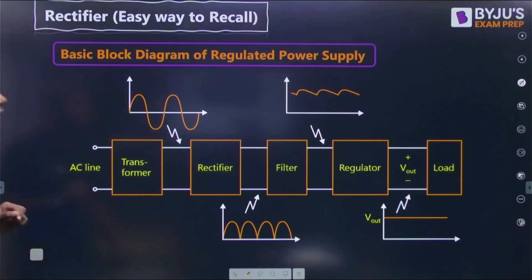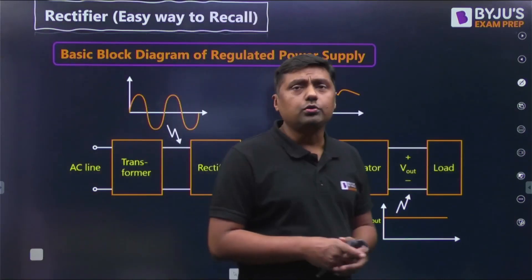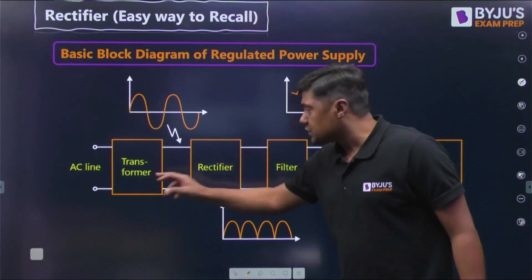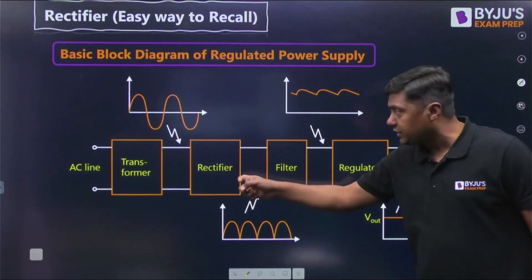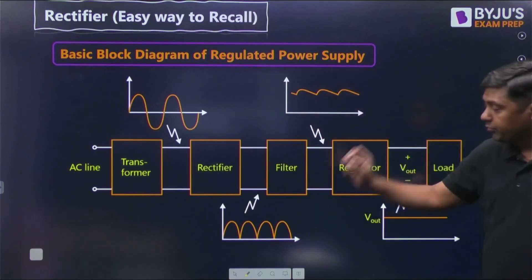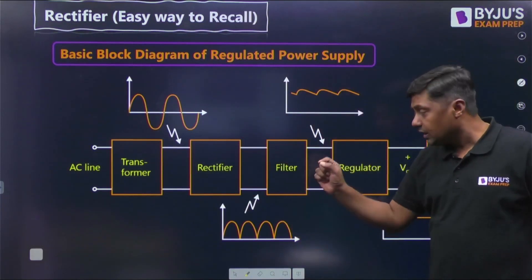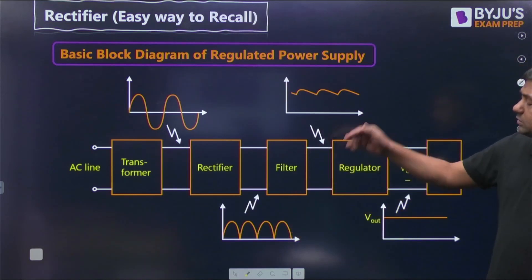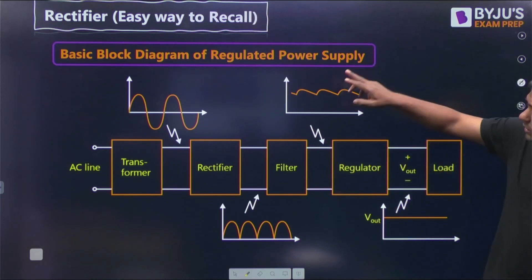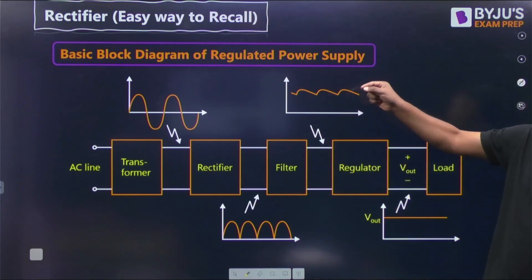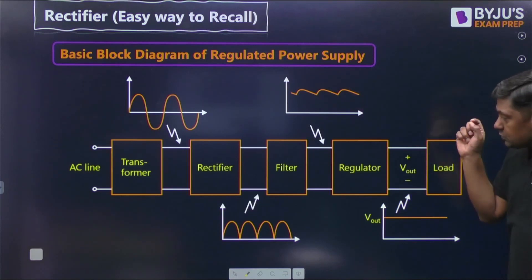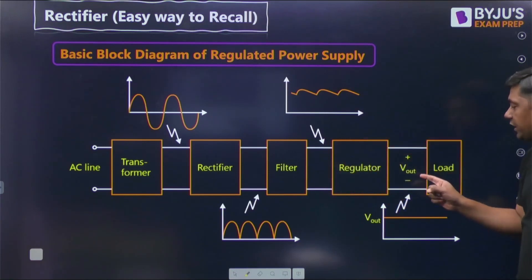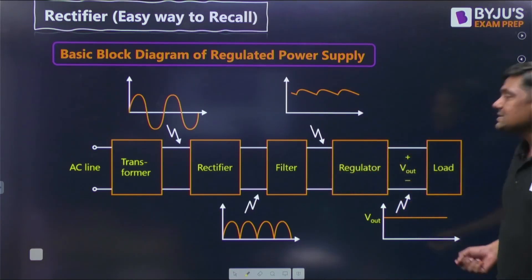This is a basic block diagram of a regulated power supply — how we convert a 230 volt, 50 hertz supply into a pure DC signal. The first component is a transformer, then a rectifier which converts the bidirectional waveform into unidirectional output, called pulsated DC. It has AC plus DC components; the AC part is called ripple. We use a filter to remove the ripple, then a voltage regulator to handle remaining variation, giving us regulated, almost pure DC output.